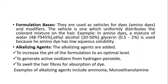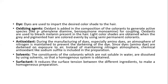Ammonia is added in some hair products specifically to swell the hair fibers so that the dye gets absorbed. Dyes are used to impart the desired color shade to the hair. Oxidizing agents are added to generate active species like para-phenylenediamine and benzoquinone monoamine for coupling. Oxidants are also used to bleach the melanin present in the hair; light color shades are obtained when gray and pigmented hairs are colored evenly using semi-permanent colors.